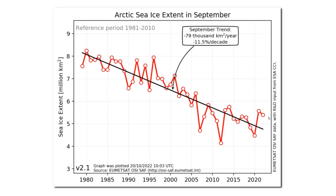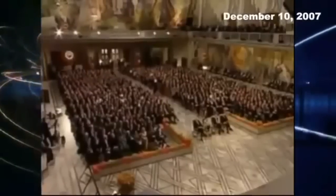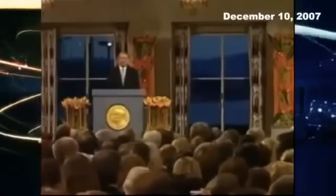Fifteen years ago this week, Al Gore predicted an ice-free Arctic by the year 2014 when he received his Nobel Prize. But there's more sea ice now than there was back then. Another new study to be presented by U.S. Navy researchers later this week warns it could happen in as little as seven years from now.